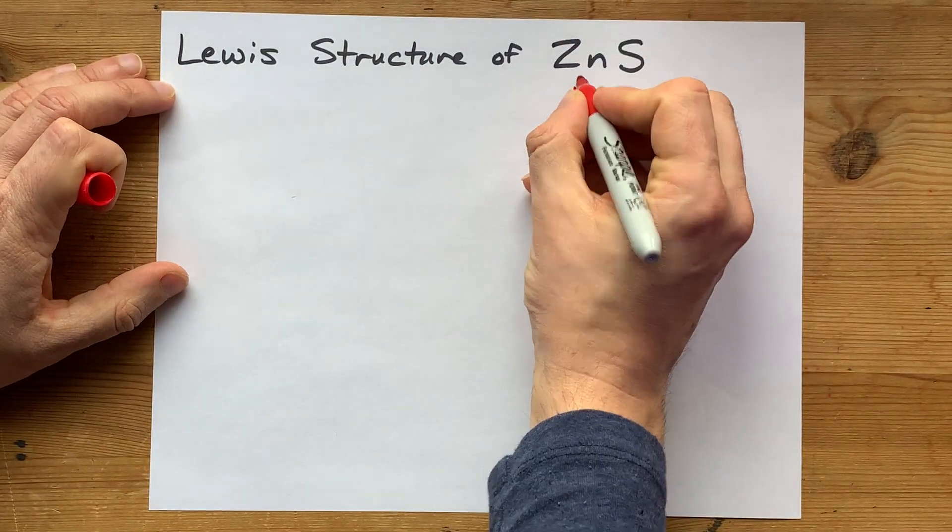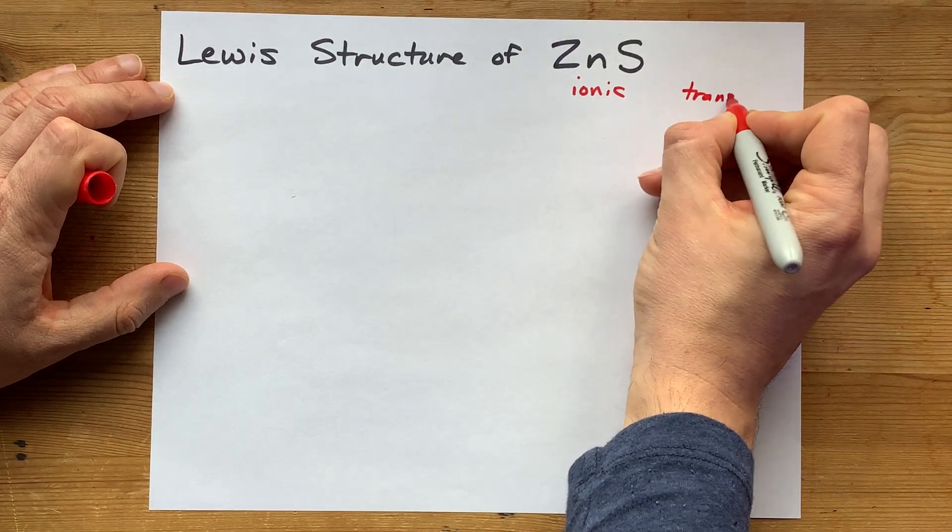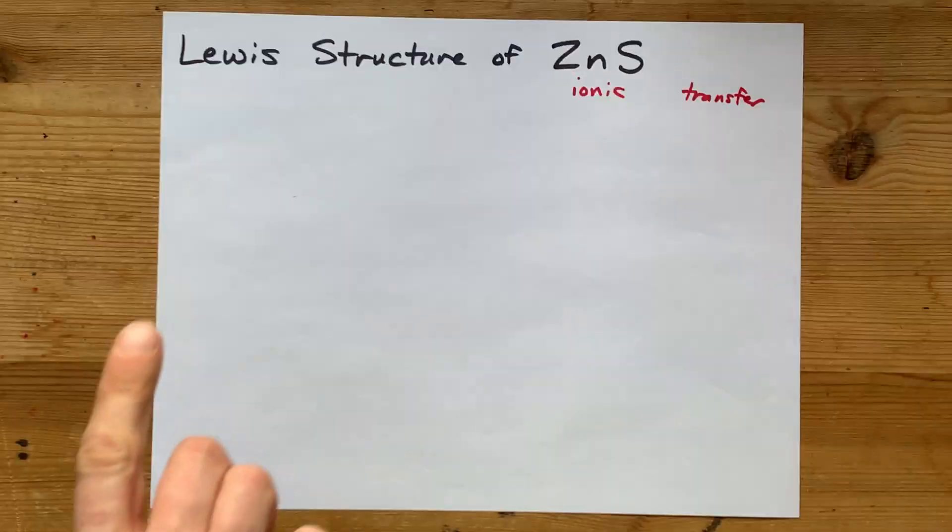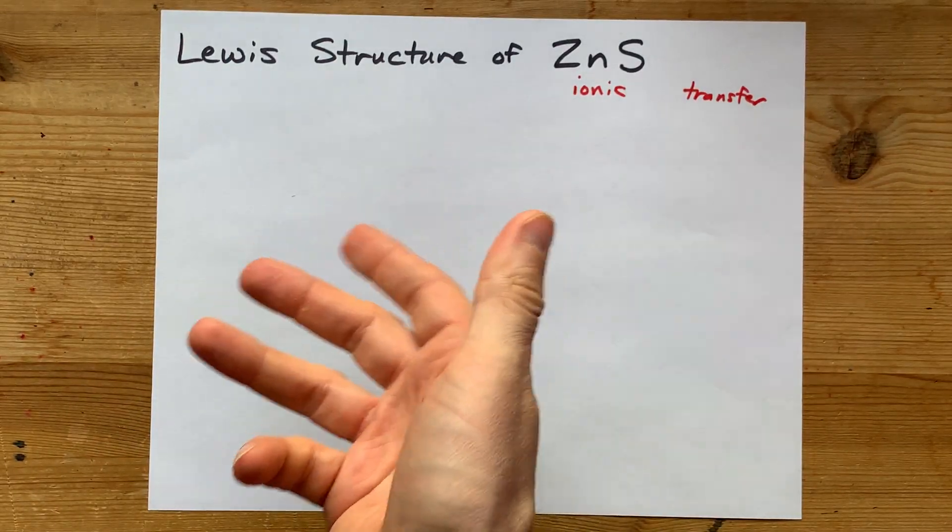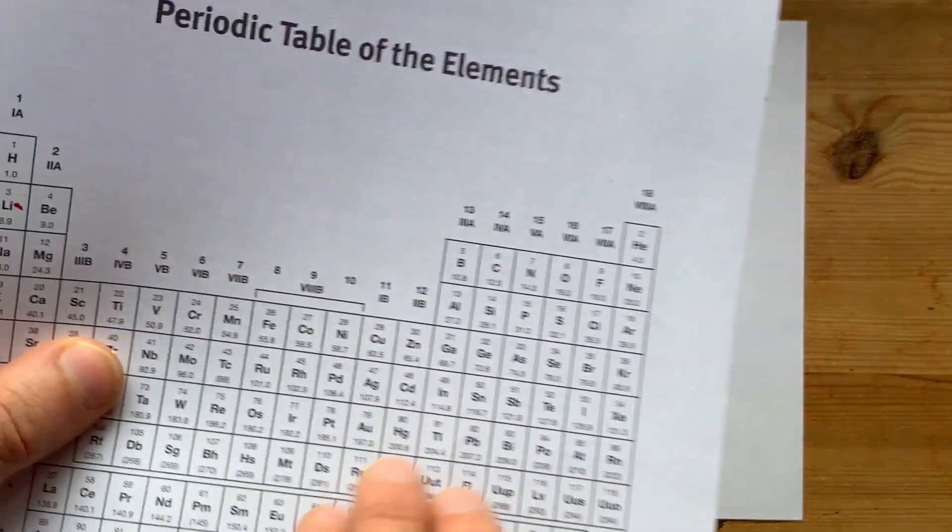The point is you've got a metal and a non-metal which combine to make an ionic compound. That means there's going to be a transfer of electrons from one to the other, from metal to non-metal. How is that going to happen? Well, I'll tell you.